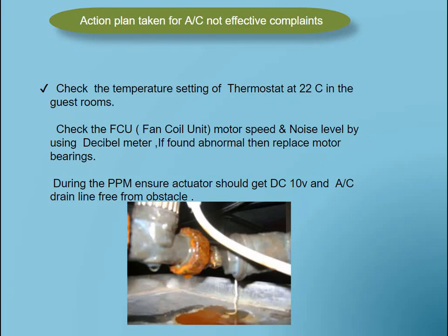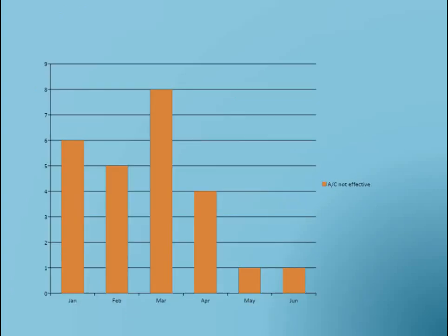Action plan for AC not effective complaint: check the thermostat temperature setting at 22°C or 23°C in the guest room. Check the FCU (fan coil unit) motor speed and noise level using a decibel meter; if found abnormal, replace the motor bearing. During planned preventive maintenance, ensure the actuator receives 10V DC and the FCU drain line is free from obstacles. After implementing these measures, complaints drastically reduced in that particular hotel.